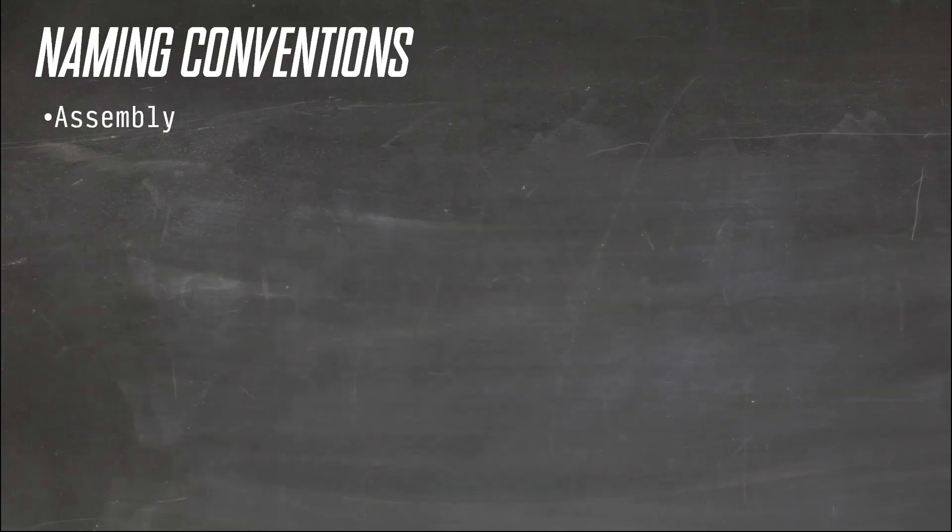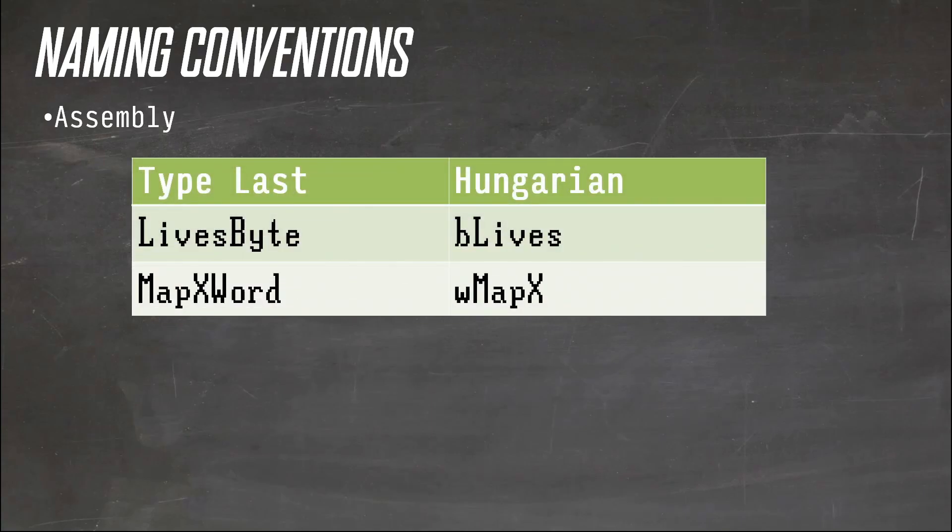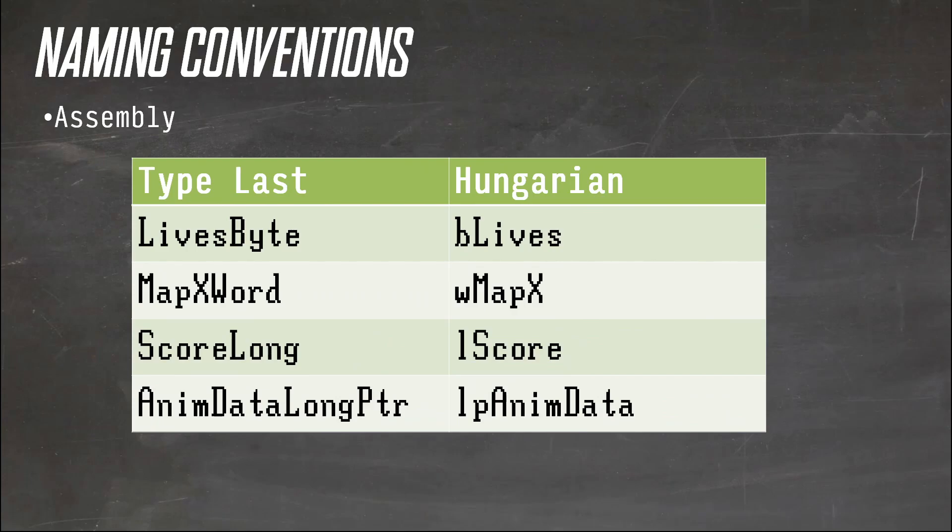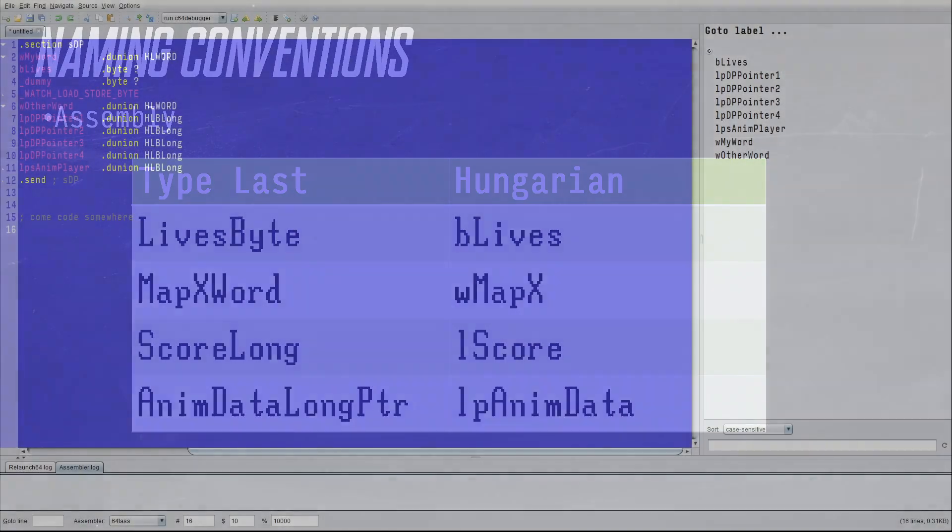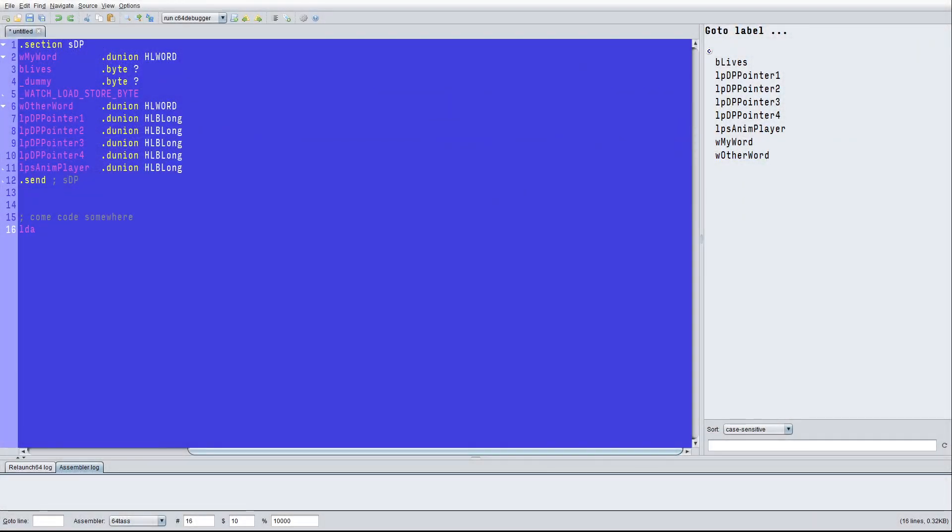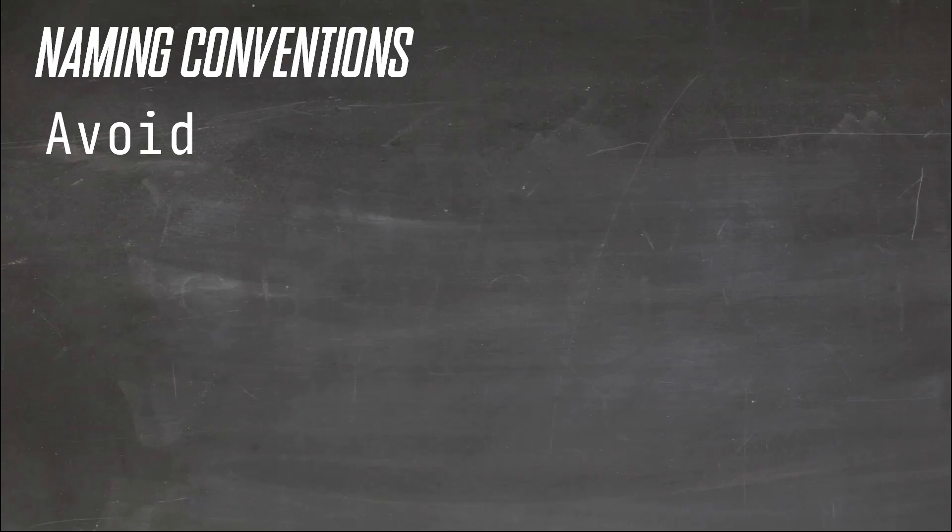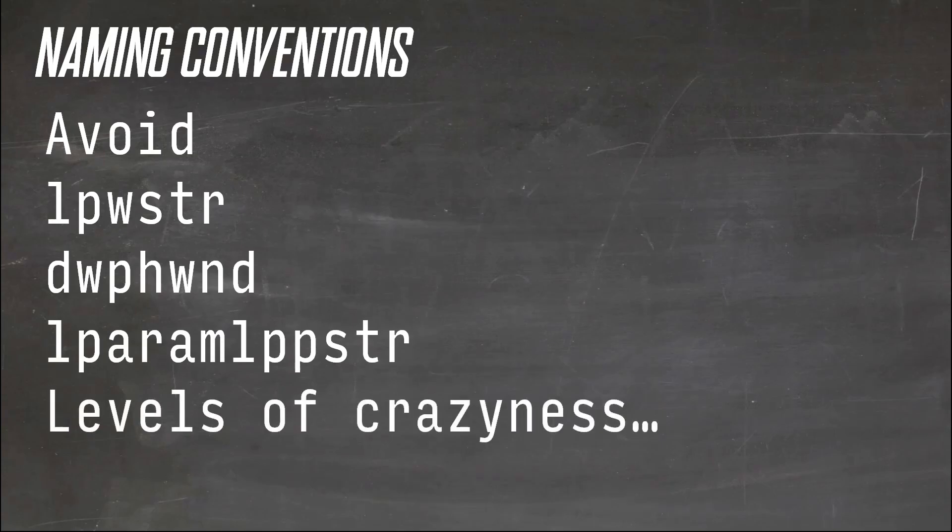For example: lives byte, b_lives; map_x word, w_map_x; score long, l_score; anim_data long pointer, lp_anim_data. I prefer Hungarian notation, it works better with autocomplete. For example, when I do LDA open square bracket, I can then type lp, then invoke autocomplete, and now the list will be filtered to all things that are long pointers. If I don't see what I want, then it's not an lp, and my code is wrong. You don't have to stick to just byte word long pointer. It is best to talk about what they are logically as well. So if animation struct, call it anim struct. Just don't go nuts and end up in the lpwstr craziness.